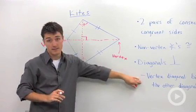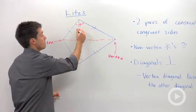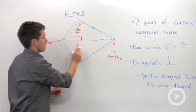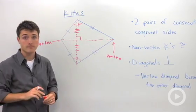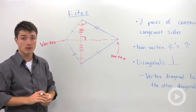Another key fact about this is that this diagonal between the two non-vertex angles is bisected by this longer diagonal. So a couple key things to remember when you're trying to solve problems that involve a kite.